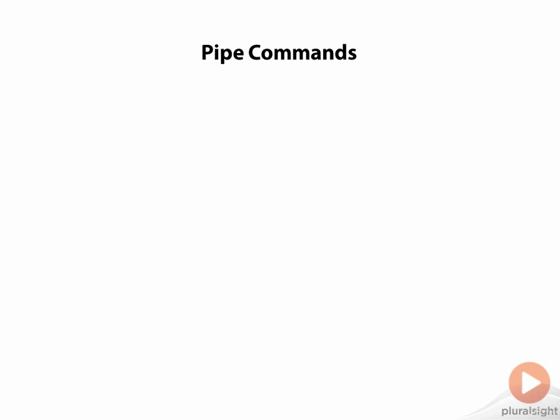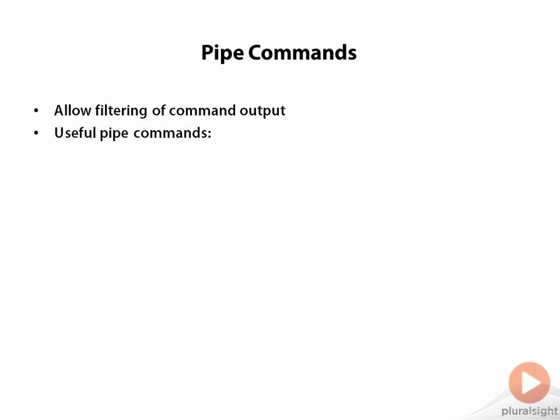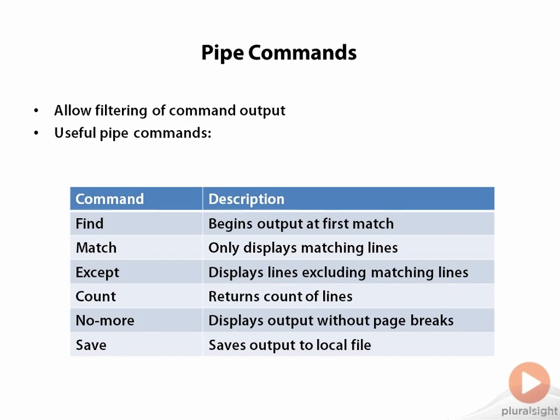Just like in Cisco IOS and a lot of command line interfaces, we have the capability to use pipe commands to filter command output. Some of the useful pipe commands available in Junos are listed here. The find command — used as 'show interface pipe find' — will search the output and begin at the first match, similar to the begin pipe command in Cisco IOS.